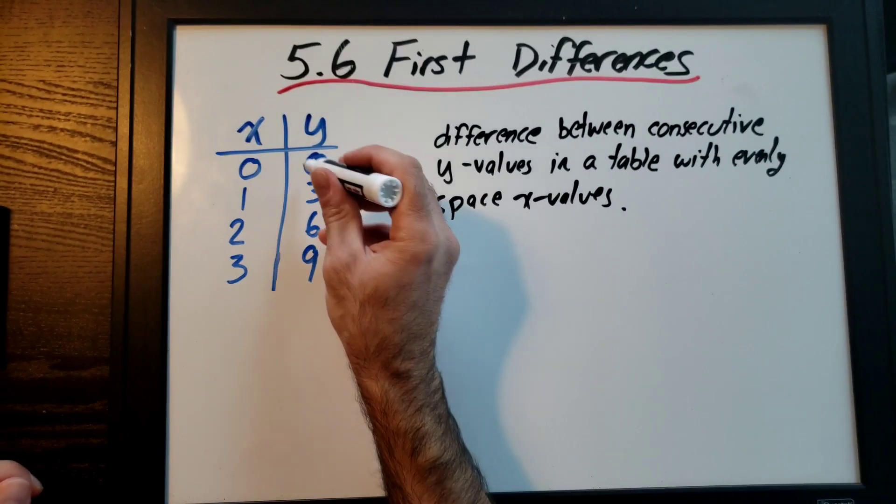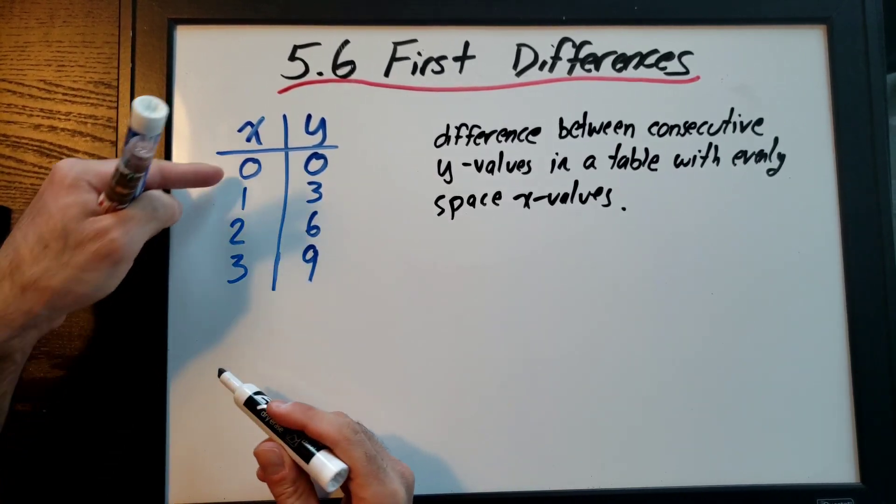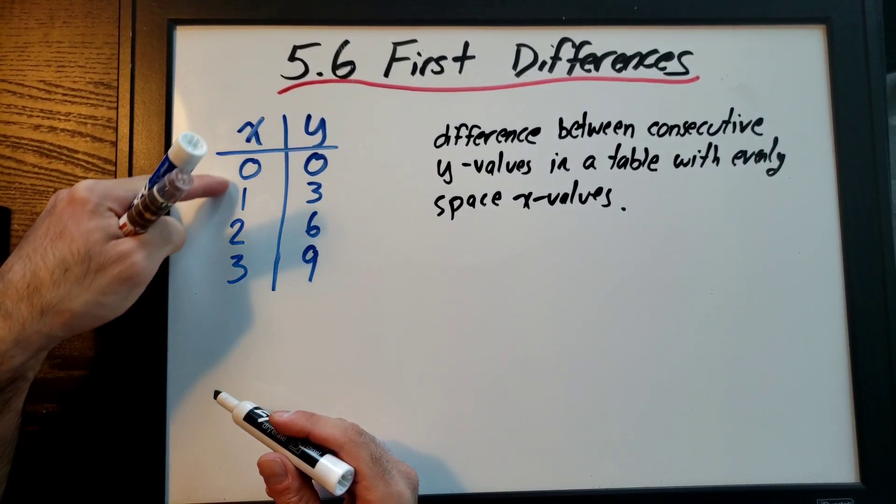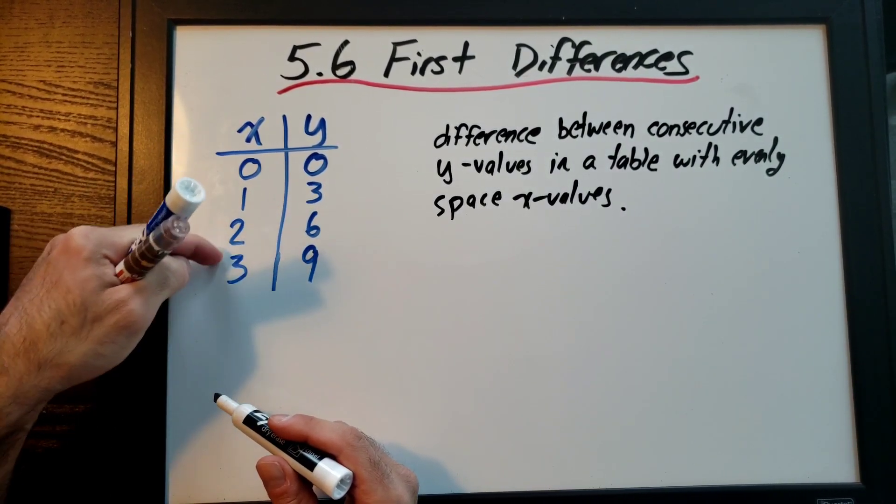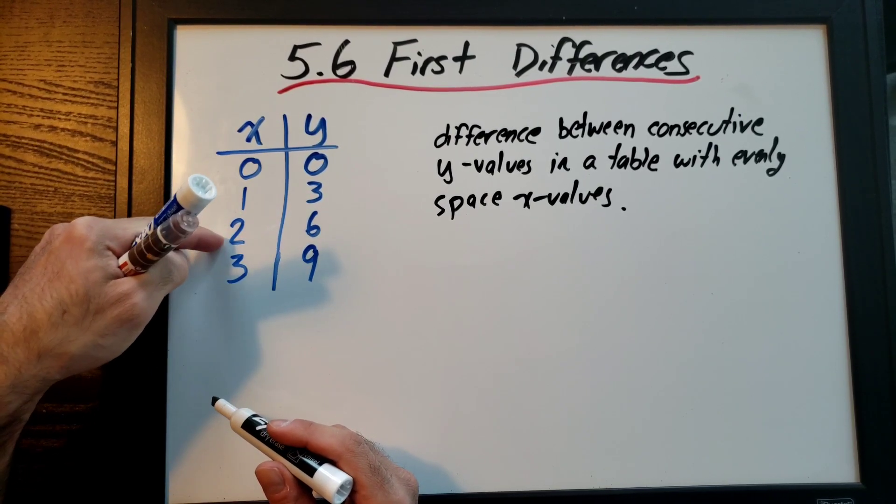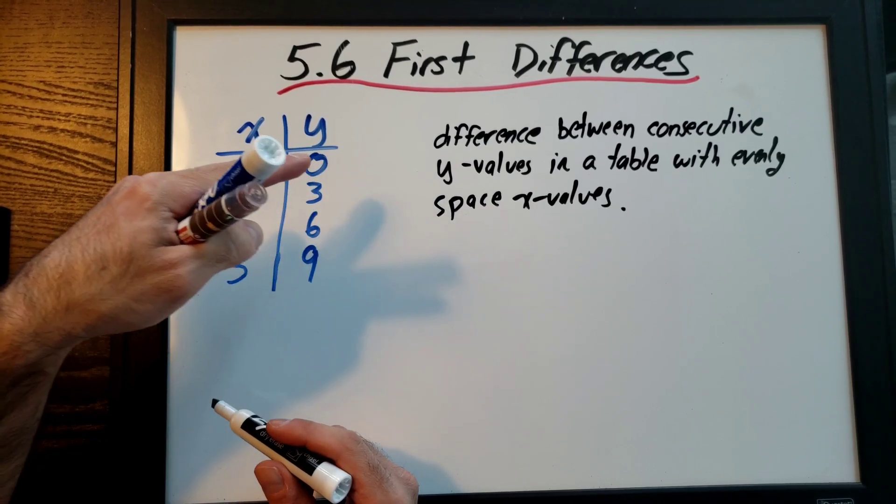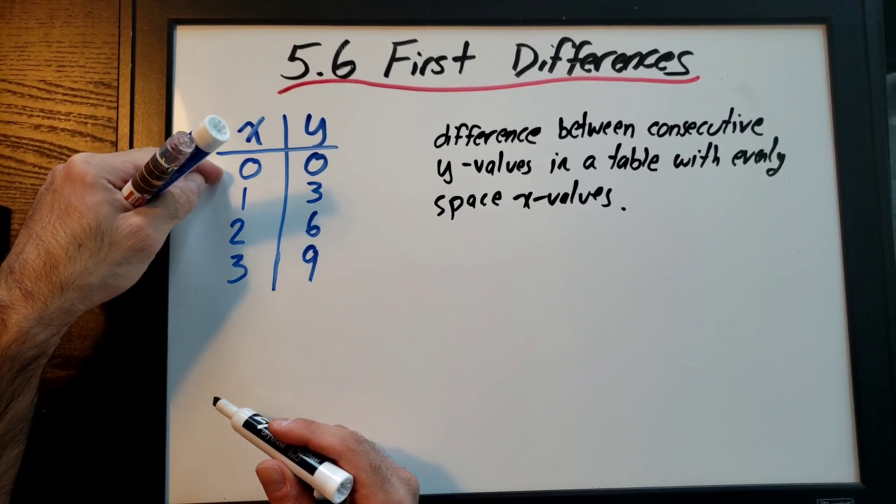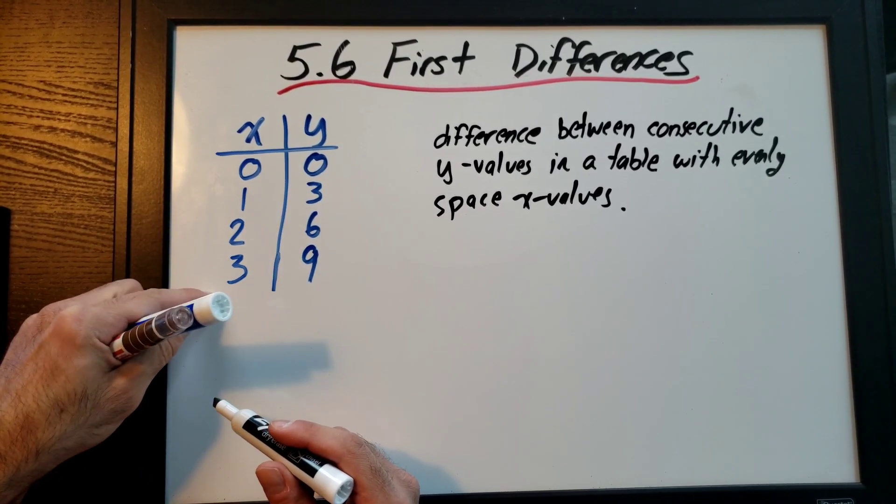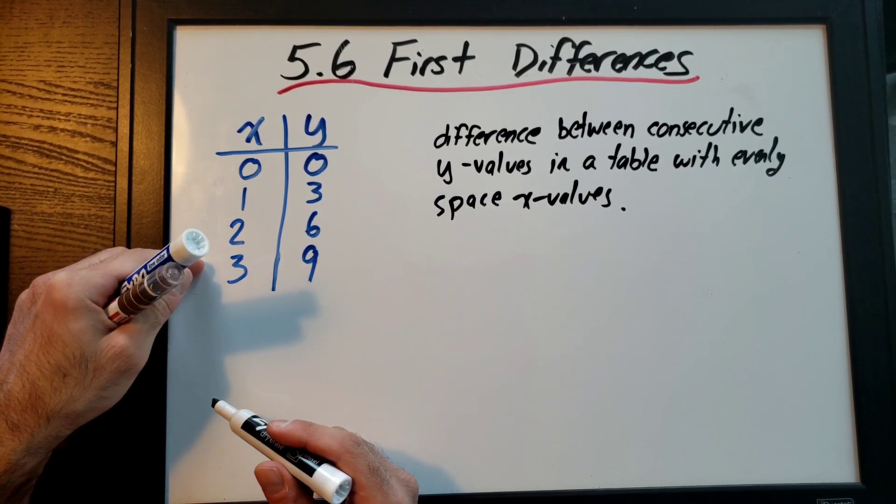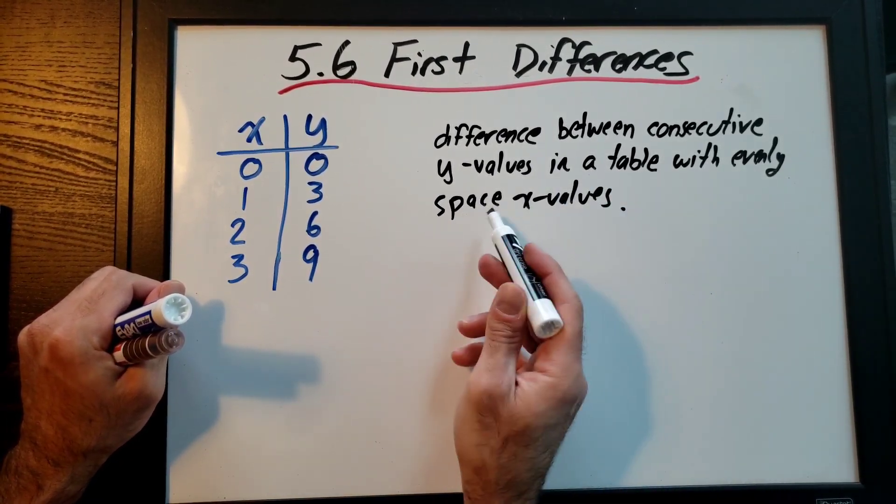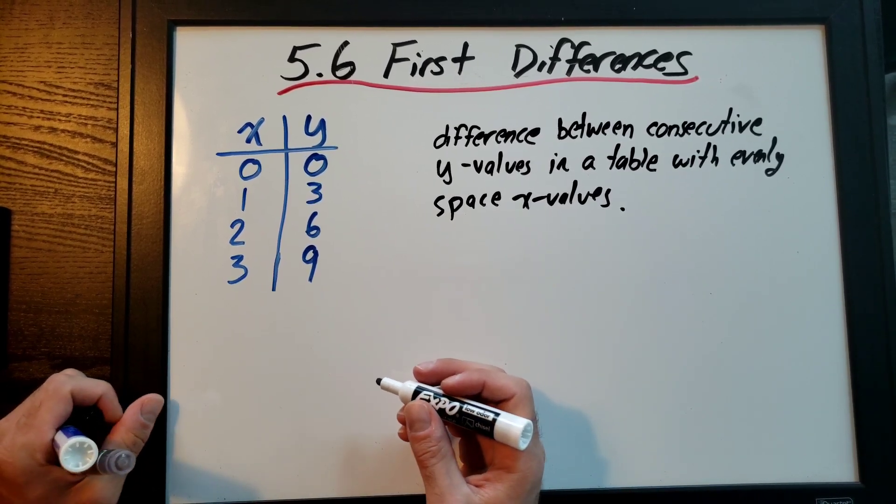So what's that mean? It means it's the difference in these Y values as long as these values are going up by a consistent number. This is 0, 1, 2, 3. If this was like 0, 1, 5, 90 I can't really figure out first differences using this strategy. So I need the X's to go up by the same amount. It could be 5, 10, 15, 20. It could be 100, 200, 300. As long as it's evenly spaced X values to find my first differences, I just subtract my Y values.